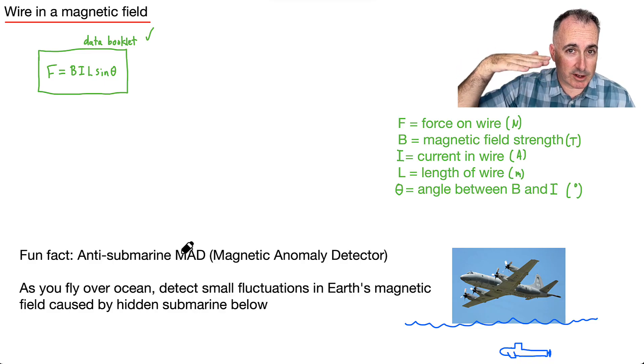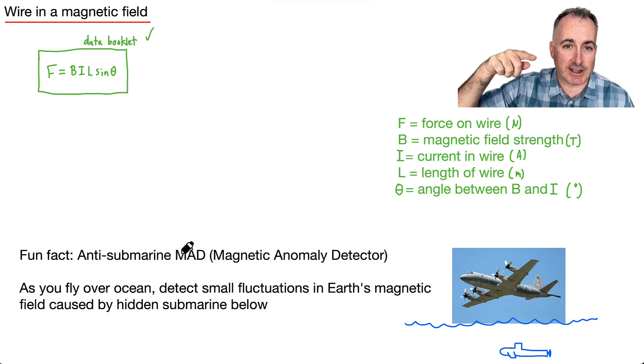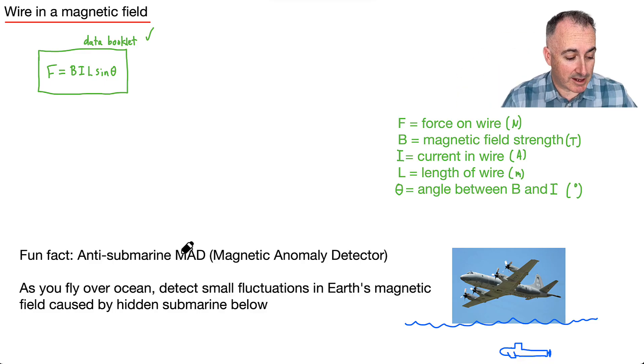And that means if you fly over the ocean and, you know, you're flying pretty low, and all of a sudden you detect a fluctuation, a difference in the Earth's magnetic field, then that tells you there's likely something underneath you that's altering the Earth's magnetic field. You know, something that's actually causing this fluctuation. And that's usually a submarine.